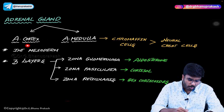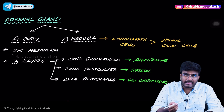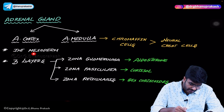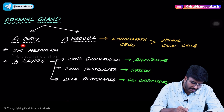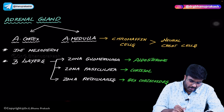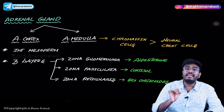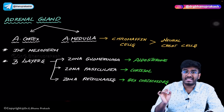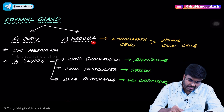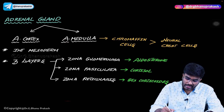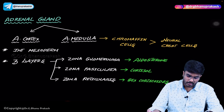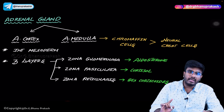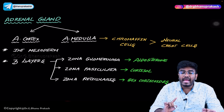An important point related to embryology: the adrenal cortex is derived from intermediate mesoderm, but the adrenal medulla is derived from neural crest cells — so the adrenal medulla is neural crest cell in origin. Both adrenal medulla and adrenal cortex have different embryological origins.